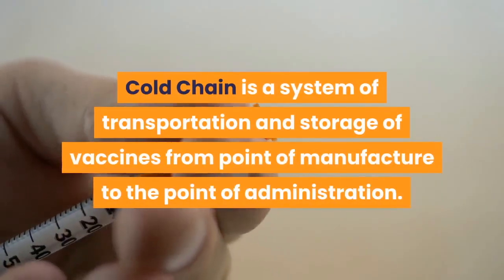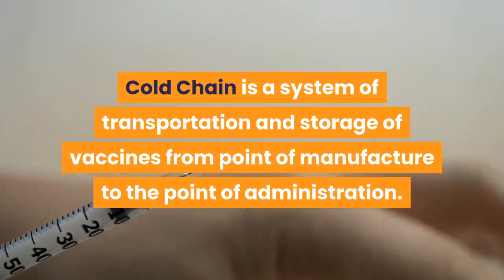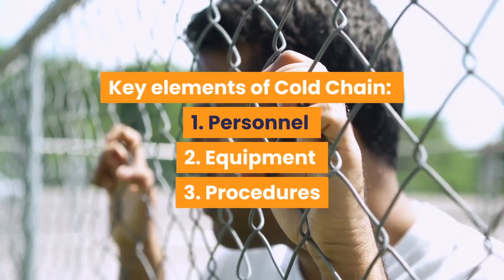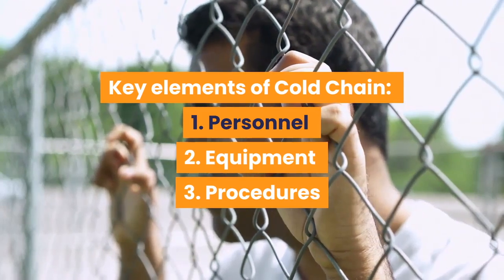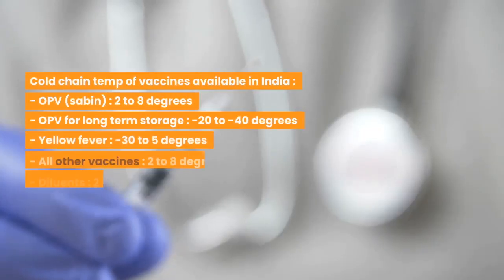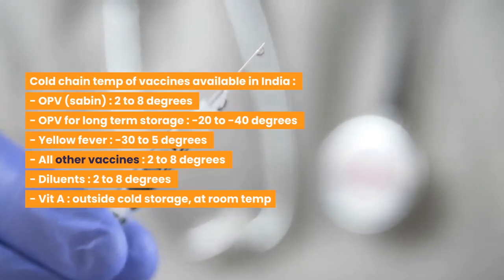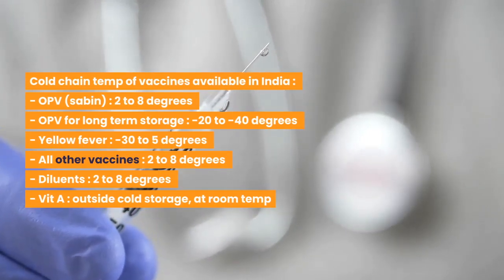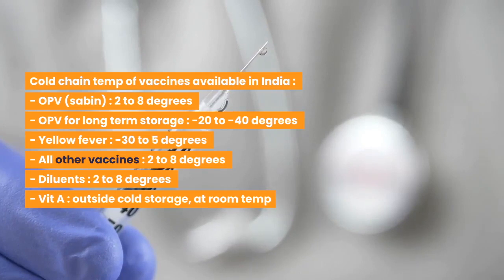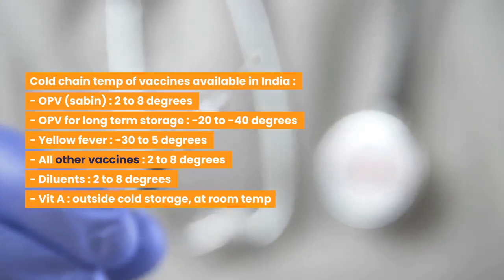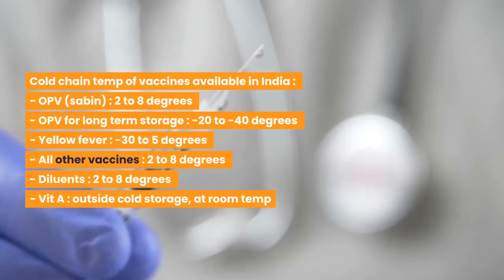Cold chain is a system of transportation and storage of vaccines from the point of manufacture to the point of administration. Key elements: 1) personnel, 2) equipment, 3) procedures. Cold chain temperatures for vaccines available in India: OPV (Sabin) 2–8°C; OPV for long-term storage −20 to −40°C; yellow fever −30 to −5°C; all other vaccines 2–8°C; diluents 2–8°C; VVM outside cold storage at room temperature.